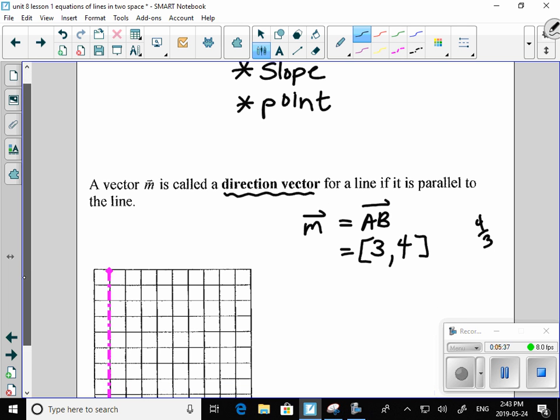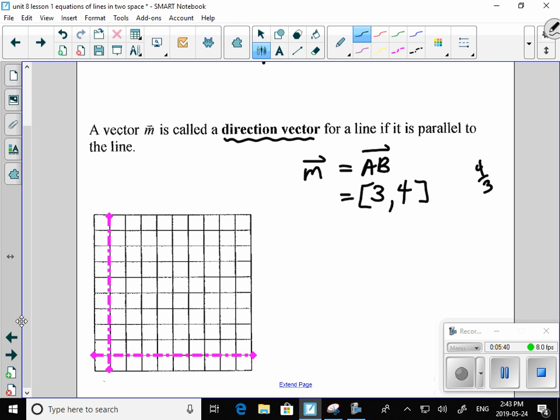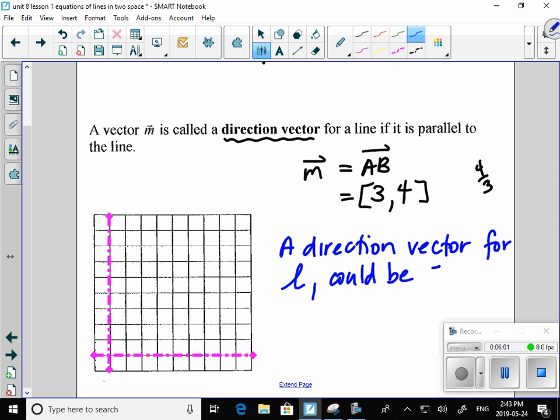So for my line, I'm going to call it l. My direction vector could be 3, 4. So a direction vector for l could be 3, 4. It could be negative 3, negative 4. It could be 6, 8. It can be any scalar multiple. And you know for lines from grade 9 as well, you could have a slope that's a multiple of the slope. So 4 over 3 could be 8 over 6 and that would be fine as well. So the direction vector can be any scalar multiple.